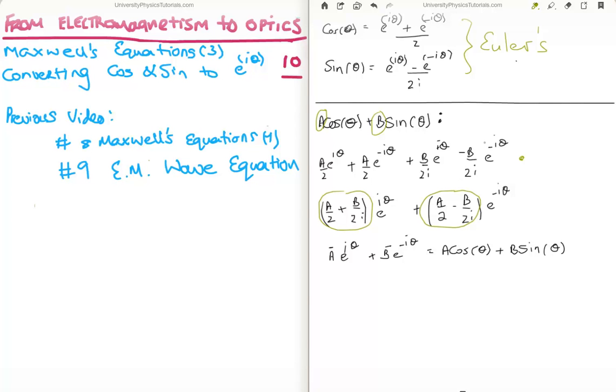Now, the thing about this is that the two sets of constants I've grouped in green are themselves a constant. So, let's call them something else. I can call them anything I want, but I'm going to call them A bar and B bar. So, what we can see is that A times cos theta plus B times sine theta is the same as another constant, A bar, E to the i theta, plus B bar, E to the minus i theta.